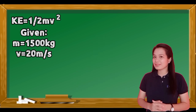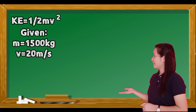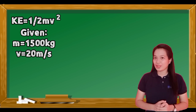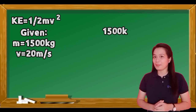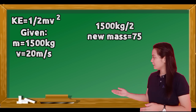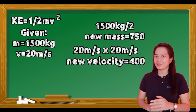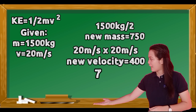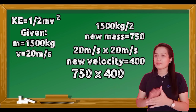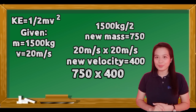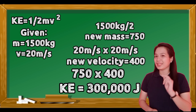Our given values are: mass is 1500 kilograms and velocity is now 20 meters per second. Let's calculate the kinetic energy. One half of 1500 kilograms is 750 kilograms. Then we square the velocity: 20 times 20 equals 400. We multiply 750 by 400, which equals 300,000 joules. That is our new kinetic energy.